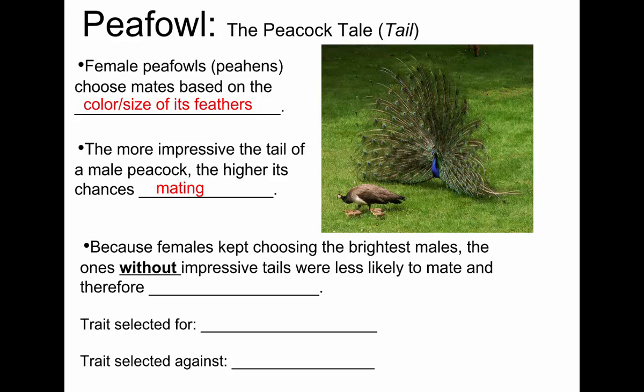Because females kept choosing the brightest males, what happens to the males born with some variation that gives them no color in their tail? They get rejected. This is not so much about survival — it's that those born with boring tails don't reproduce; they don't pass on their genes. So the large, colorful tails were selected for, and the smaller tails were selected against throughout this process.